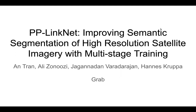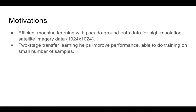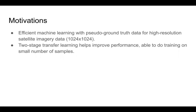This is a joint work with Ali, Jagan, and Hannes. The motivation for our work is to develop a machine learning method with pseudo-ground truth data for high-resolution satellite imagery. The image size we consider is 1024x1024 pixels. We develop a two-stage transfer learning approach to help improve performance and enable training on a small number of samples.